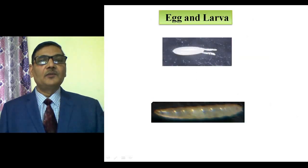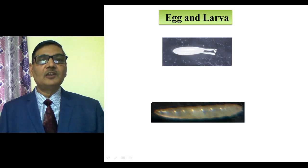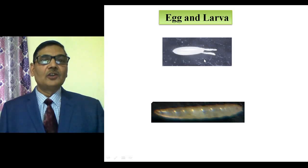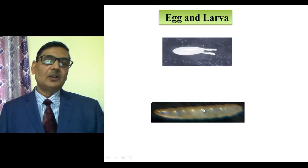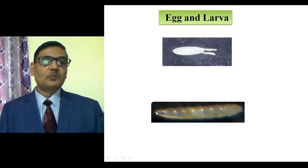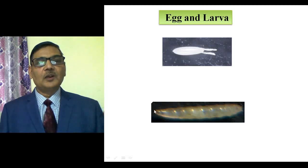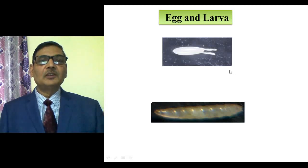If you observe the egg laid by a female, it is white in color with two filamentous structures on its anterior side. The third-instar larva can also be clearly seen — it is a dull, cream-colored structure. On the anterior side, you can see a dark part which is actually part of its mouth, the mandible. The developing stages can be clearly observed.